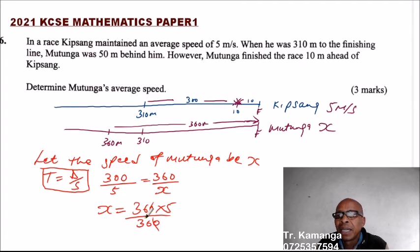you multiply by 5 and you divide by 300. So you can divide, this is 300. Divide by 6 is 5. Divide by 6 is 6. By 5 is 1. By 5 is 1. So X is equals to 6. So the speed of Mutunga is 6 meters per second.